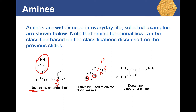Dopamine, a neurotransmitter, has an NH₂ group, which you can immediately recognize as a primary amine. Histamine — taken for allergies — is also an amine. These biological molecules, including dopamine and histamine, are all amines with important functions in the body.